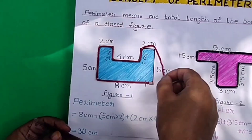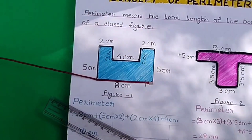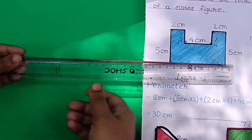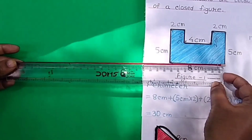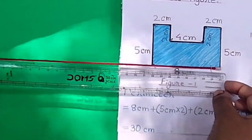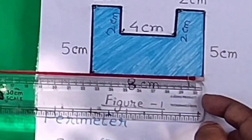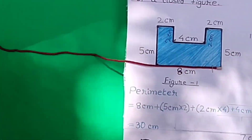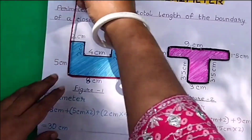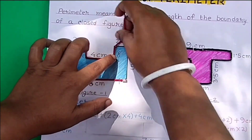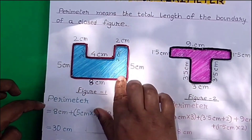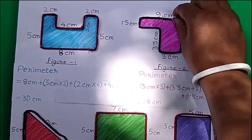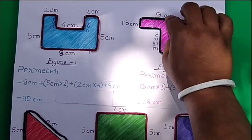Now we can check it with the help of this thread. Let's put one side of the thread at 1, and we can see that the other side is at 30 cm. That means the total length of the boundary of Figure 1 is 30 cm. Similarly, we can find and check the perimeter of the second figure.